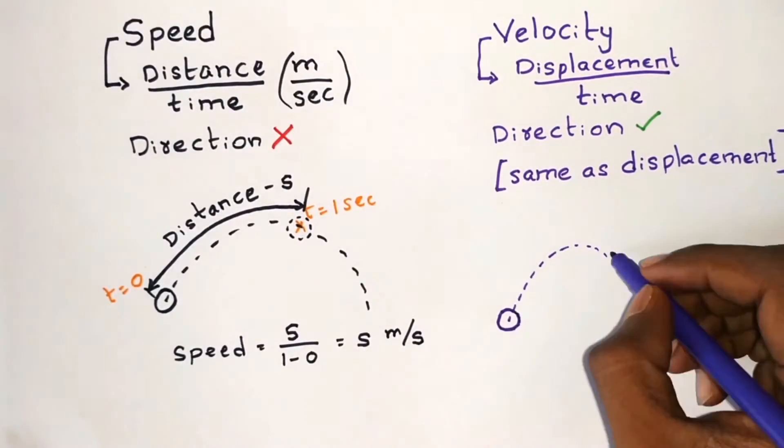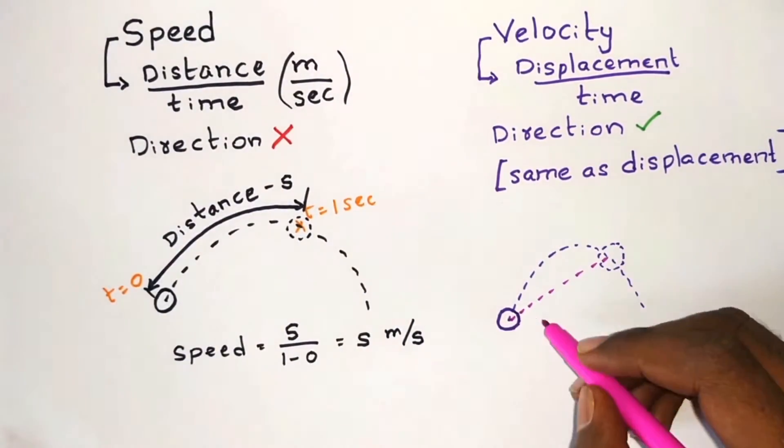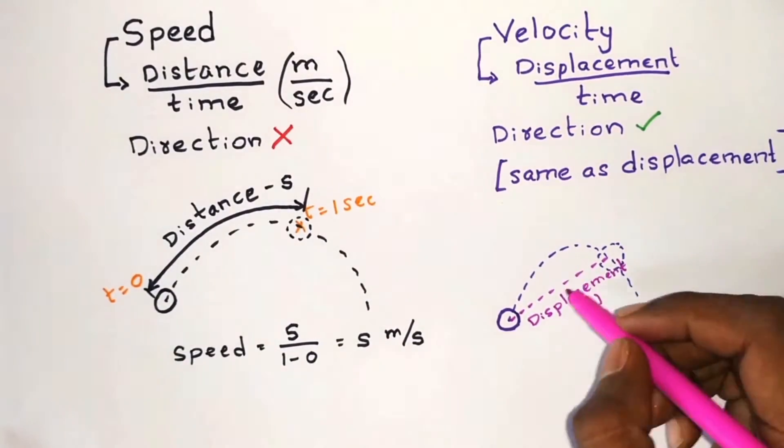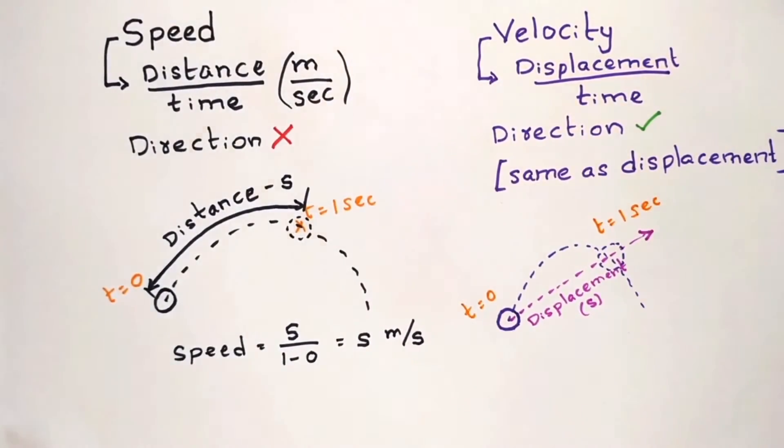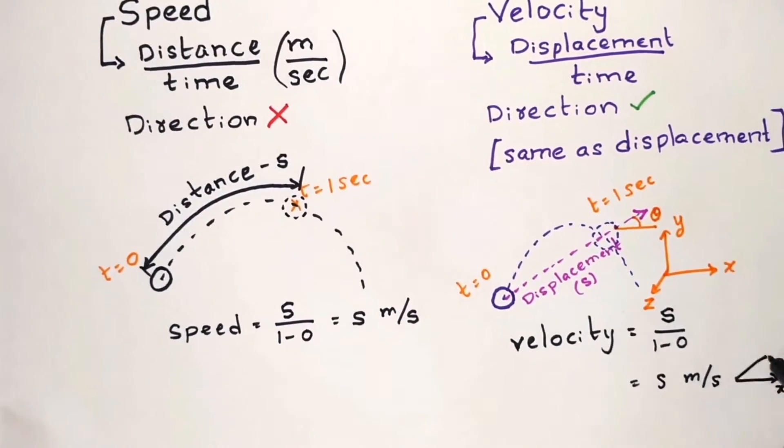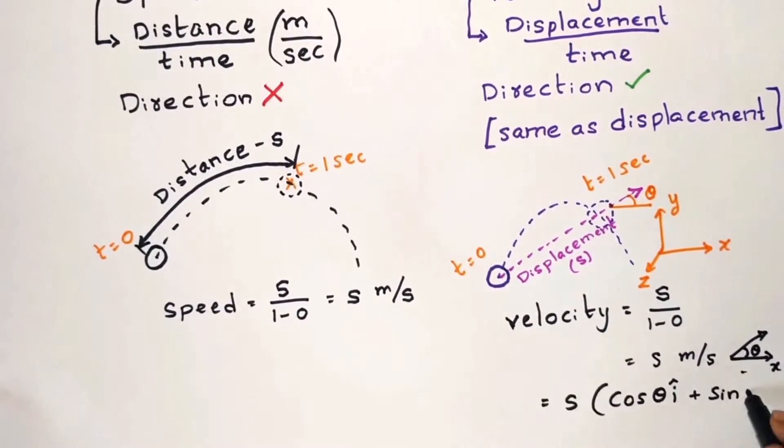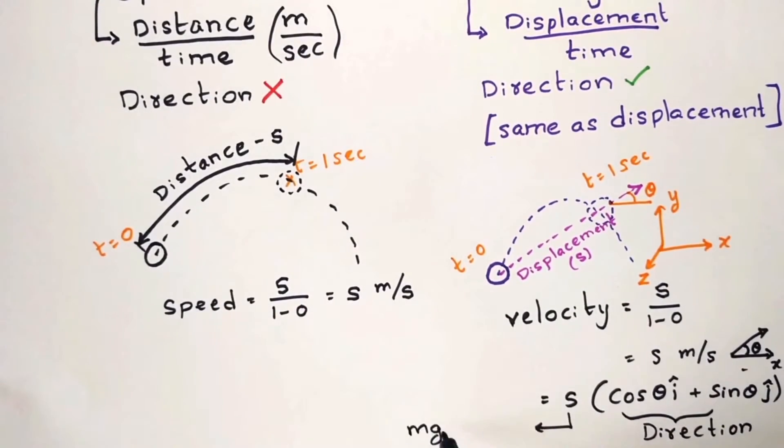Now let's consider a similar case for velocity. In this case, let's assume the ball has a displacement of s meters after one second. Then the magnitude of velocity is given by displacement by time, which equals s meter per second. Since its direction is making an angle theta with the x-axis, the direction vector is given by cos theta i cap plus sin theta j cap, where i cap and j cap are unit vectors of x and y axes.